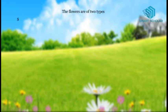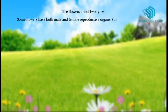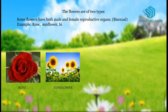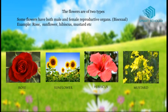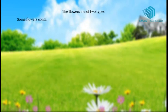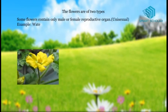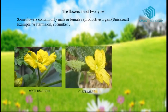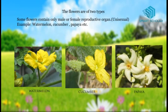Flowers are of two types. Some flowers have both male and female reproductive organs — for example, rose, sunflower, hibiscus, mustard, etc. Some flowers contain only male or female reproductive organs — for example, watermelon, cucumber, papaya, etc.